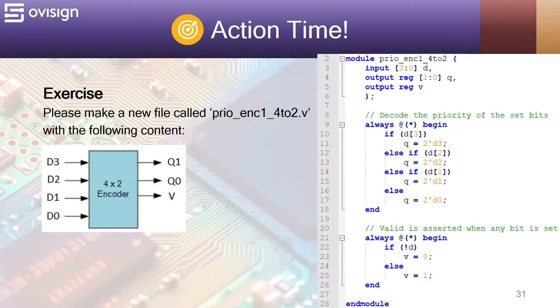And now it's action time. In this exercise we are going to implement a 4-to-2 priority encoder using if-else-if statements. Remember that this code is synthesizable and is suitable for both ASIC and FPGA.